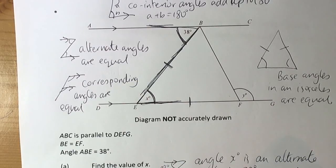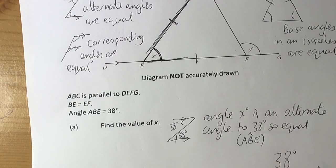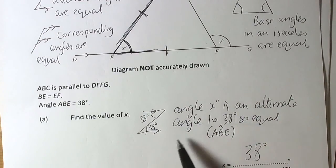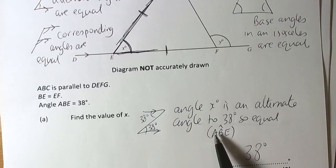We really should say that it's angle ABE using the symbol for angle, the little house of it. So the thorough answer then would be angle X is an alternate angle to 38 degrees, so equal, and angle ABE is where the 38 degrees is.